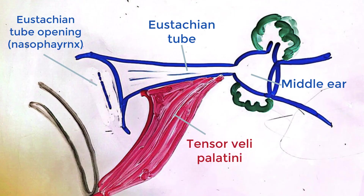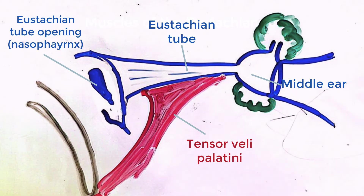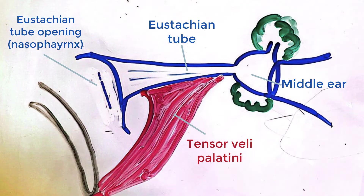As we have mentioned, the eustachian tube remains closed at rest. It is during actions such as swallowing, yawning, and sneezing that the eustachian tube opens. Closure of the eustachian tube occurs as a result of recoil of the elastic fibres within the eustachian tube, as well as extrinsic forces exerted on the wall of the tube by the surrounding tissues.